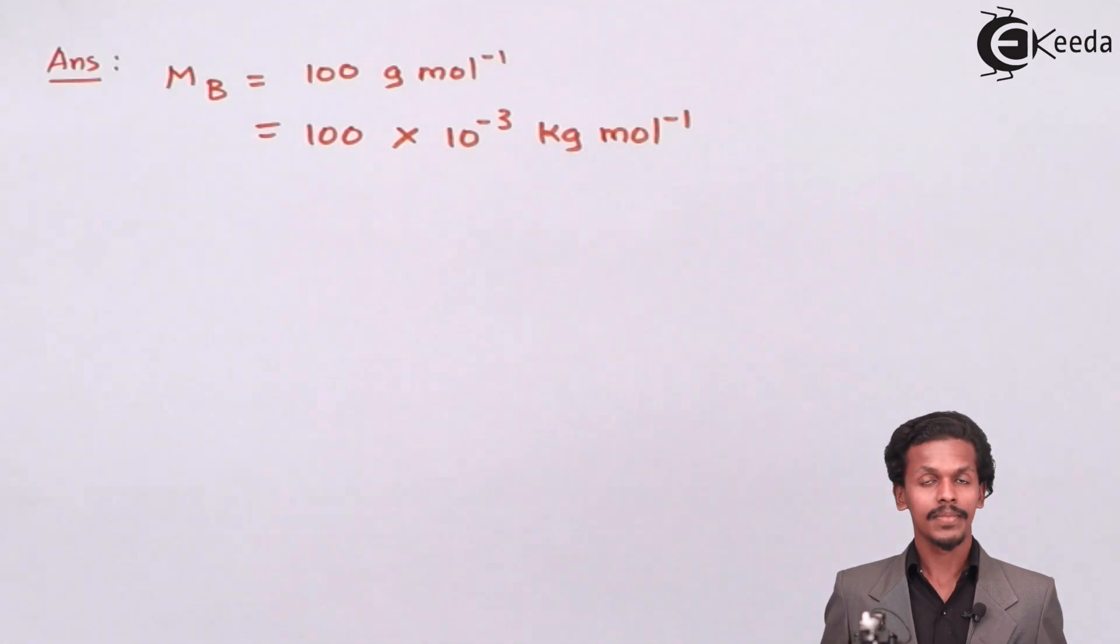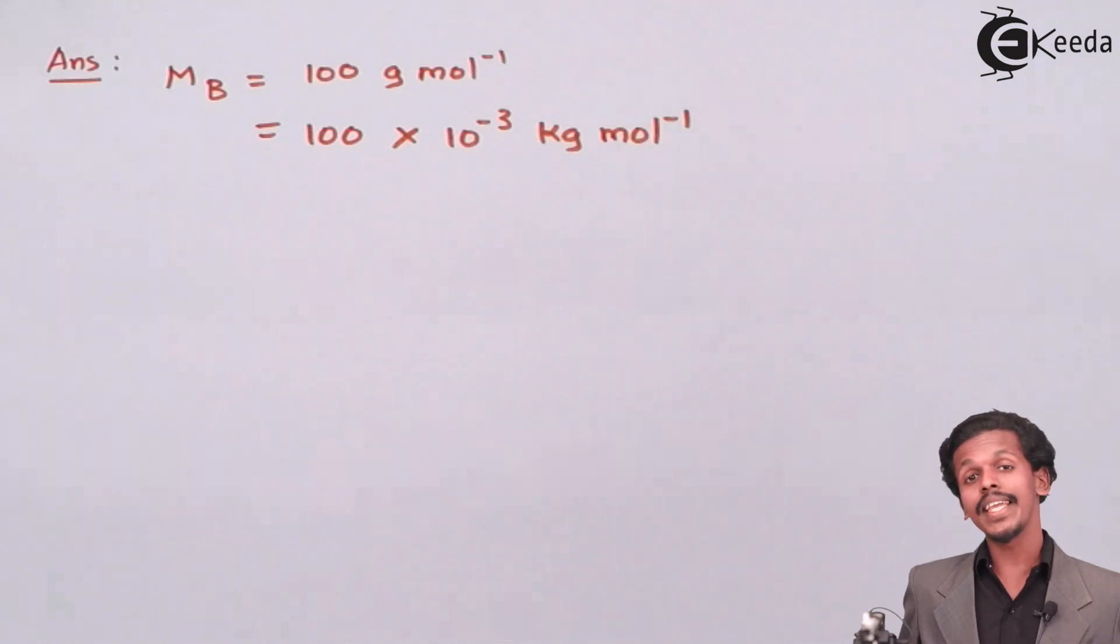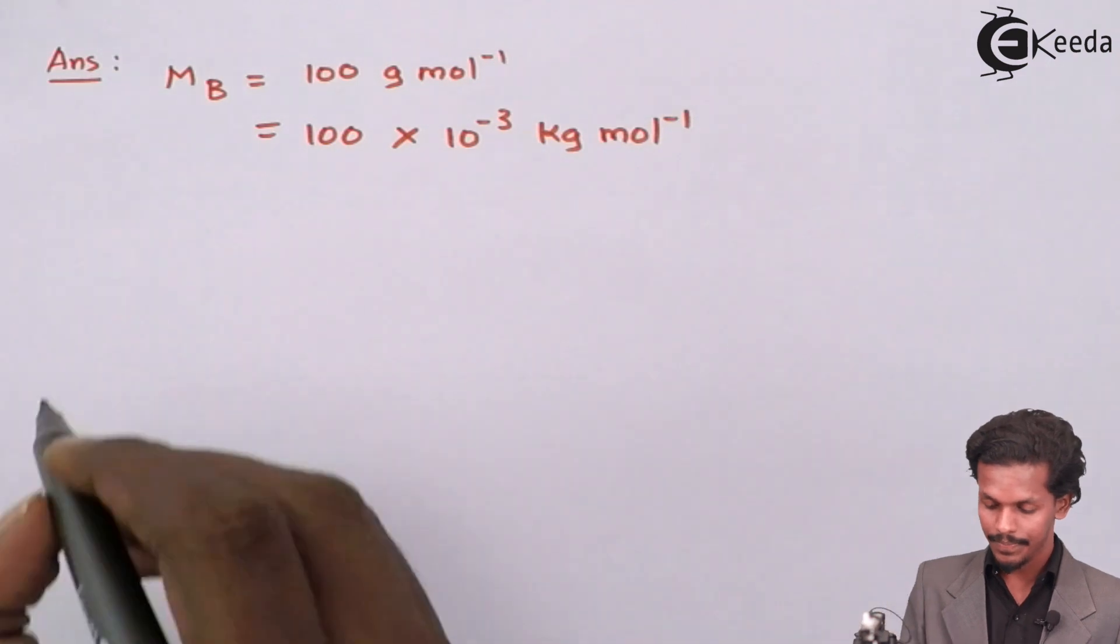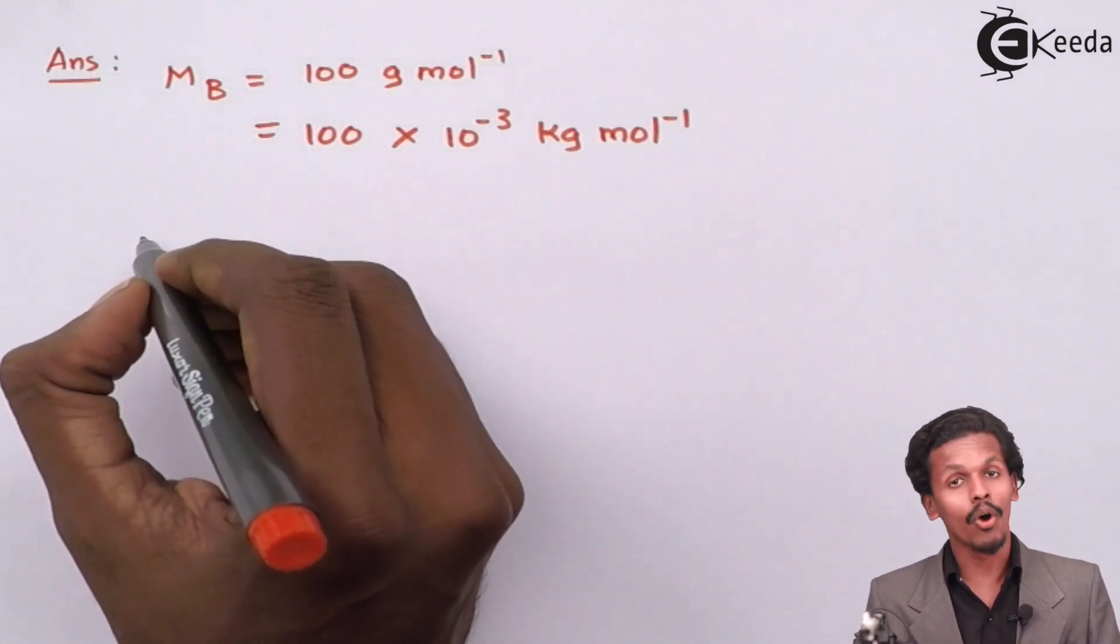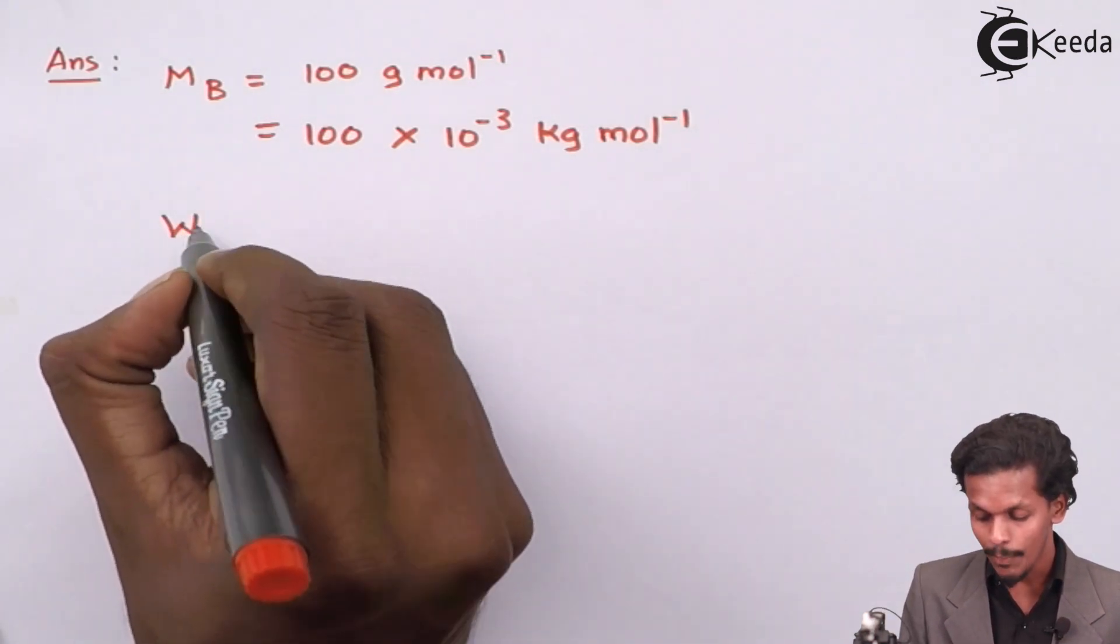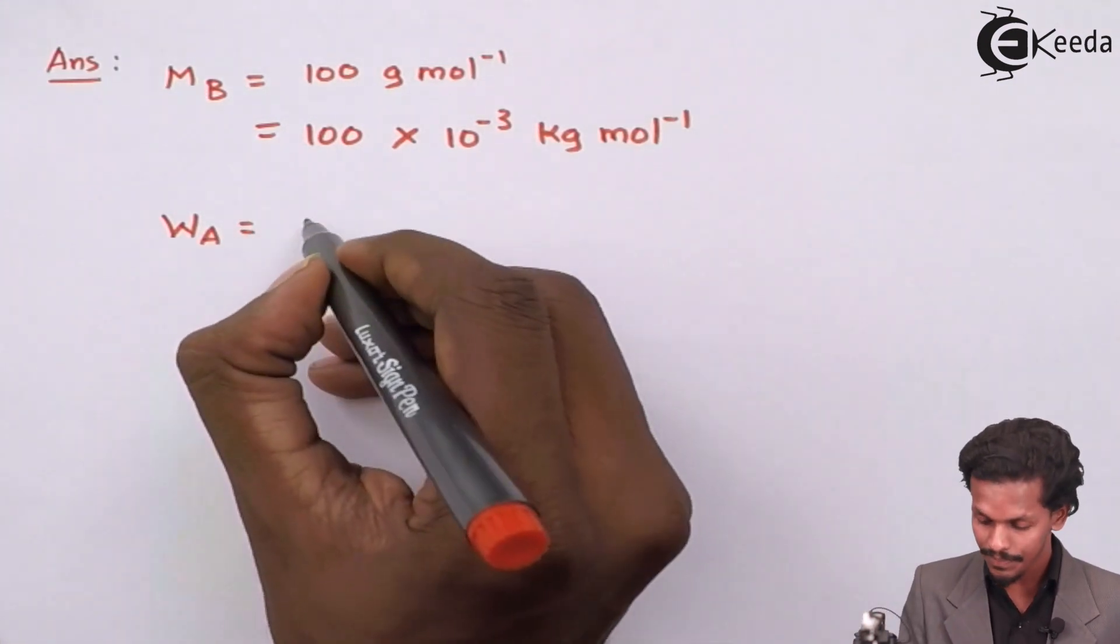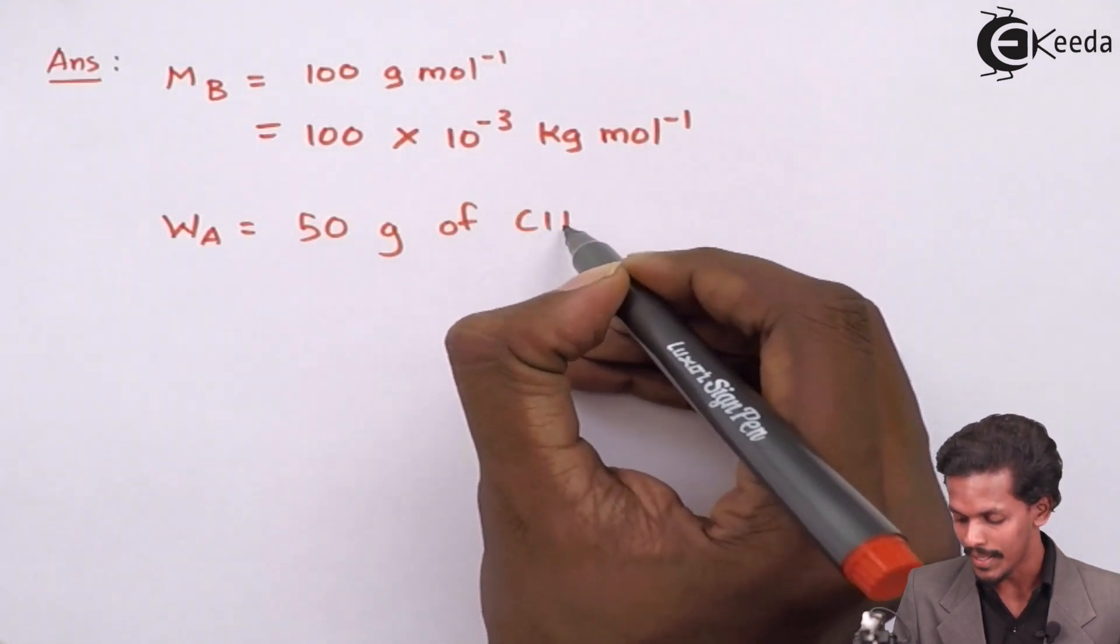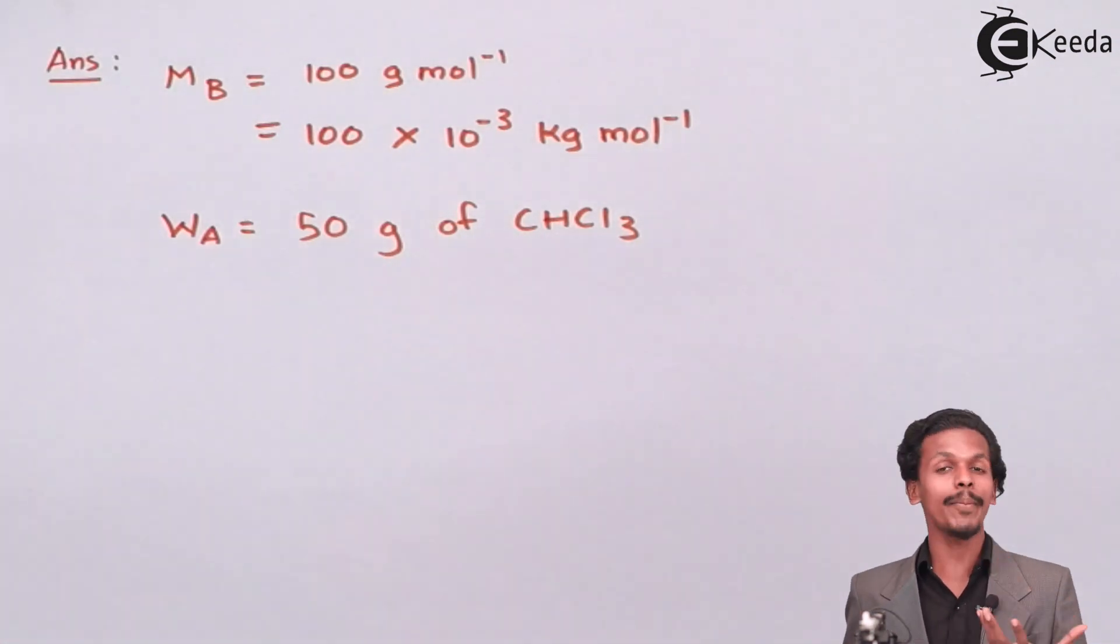Find the other data: which is 50 g of chloroform, meaning 50 g of pure solvent. In this case it is weight or mass. So for weight we give a symbol as W of pure solvent, which means A. WA in this case is 50 g of chloroform, that is CHCl3. Again, for convenience we will convert grams into kilograms.